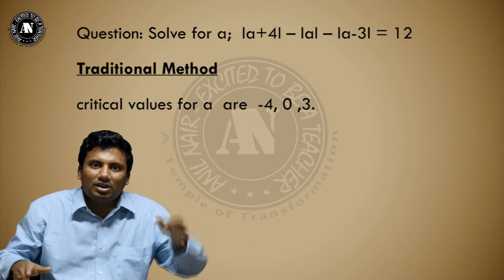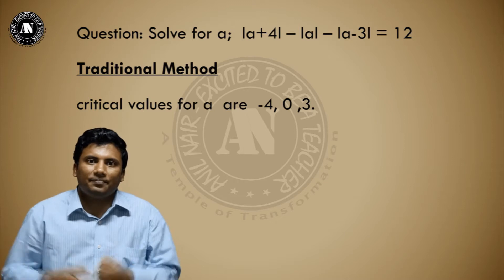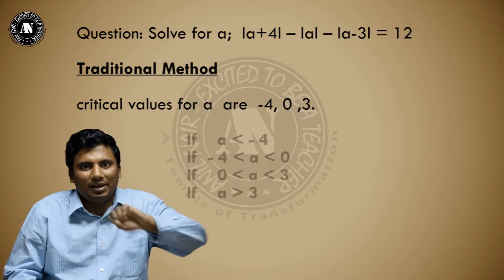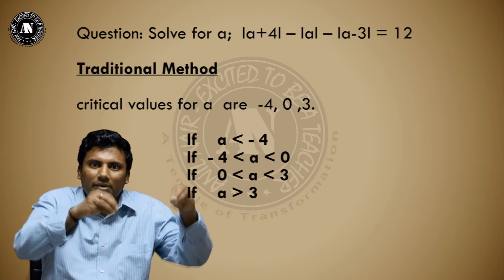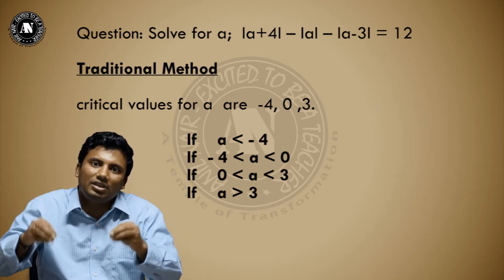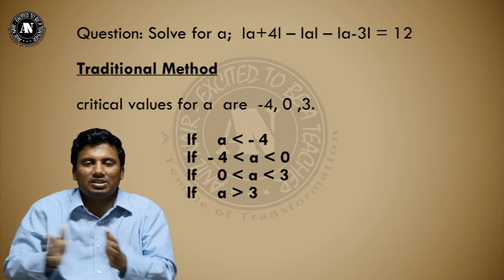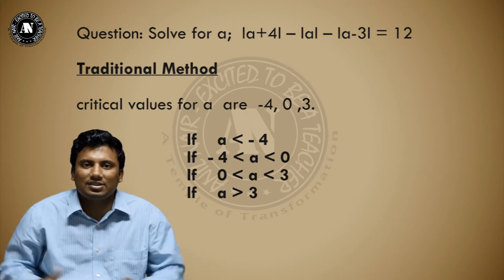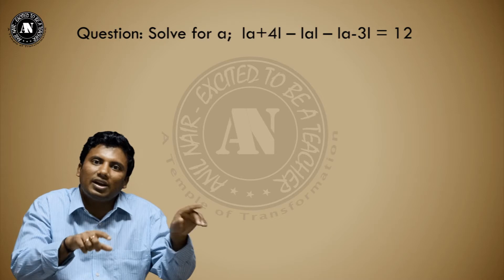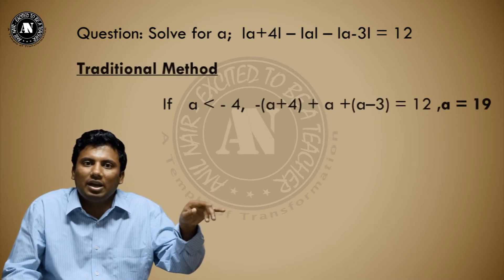We will prepare a number line with critical points minus 4, 0, and 3. There are four cases: a can be less than minus 4, a can be between minus 4 to 0, a can be between 0 to 3, and a can be greater than 3.